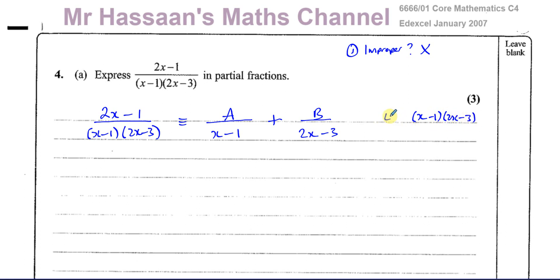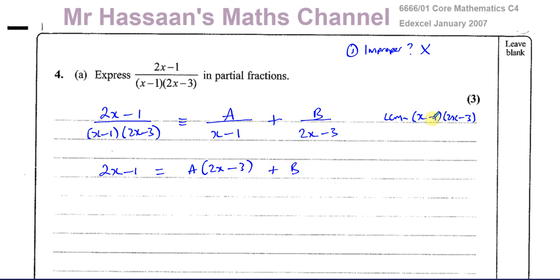If I multiply the left side by this, the whole denominator cancels out, leaving just the numerator 2x minus 1. If I multiply each term on the right by this, the (x minus 1) cancels from the first term leaving A times (2x minus 3), and the (2x minus 3) cancels from the second term leaving B times (x minus 1).